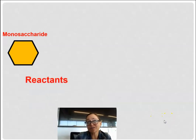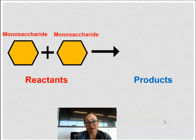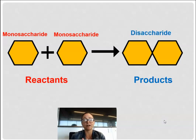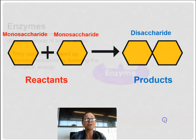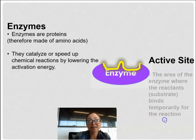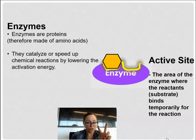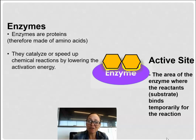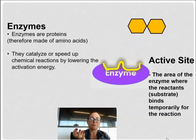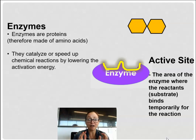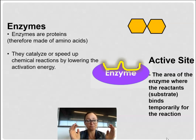For example, if we start with glucose or a monosaccharide and add two together, we get a disaccharide as our product. If we use an enzyme to join these two monosaccharides to build the disaccharide by dehydration synthesis, we now call those two sugars the substrate. You started with reactants — the monosaccharides — and ended with a disaccharide as the product. Because it's an enzyme doing the dehydration synthesis, we call the starting molecules a substrate.